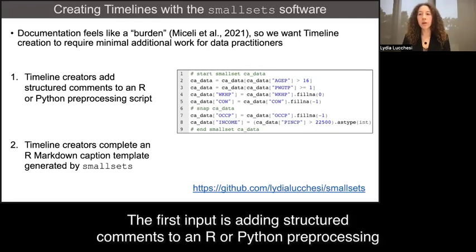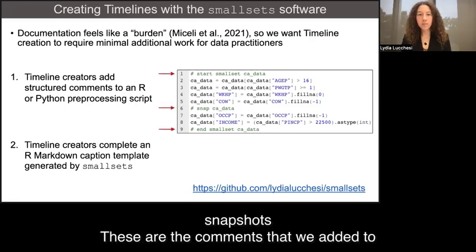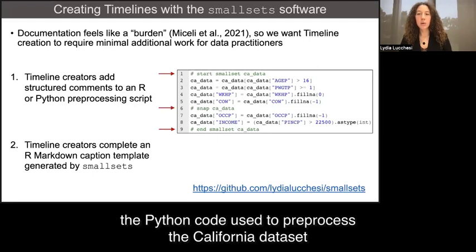The first input is adding structured comments to an R or Python pre-processing script. These tell the software where to track the code and take snapshots. These are the comments that we added to the Python code used to pre-process the California dataset.